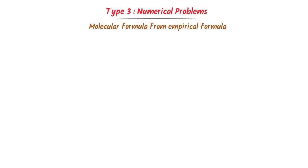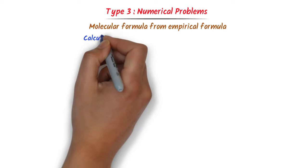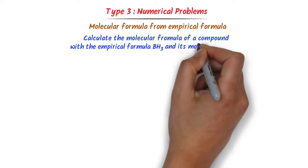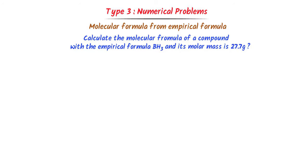Now let me teach you Type 3 numerical problems: calculating molecular formula from empirical formula. Consider this problem — calculate the molecular formula of a compound with empirical formula BH3 and molar mass 27.7 grams. In such problems, the empirical formula and the molar mass are given. I solve these using two steps.